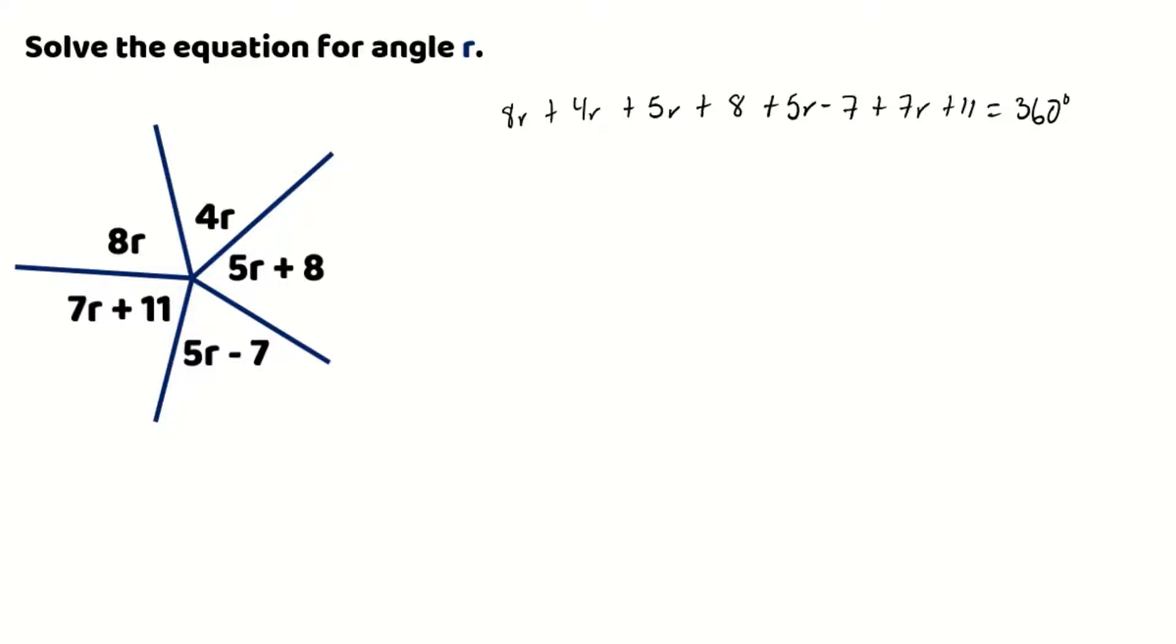Just remember that you always calculate your terms with whatever sign is in front of that term. So we have 8 plus 4 will give us 12, 12 plus 5 will give us 17, 17 plus 5 will give us 22, and 22 plus 7 will give us 29r.